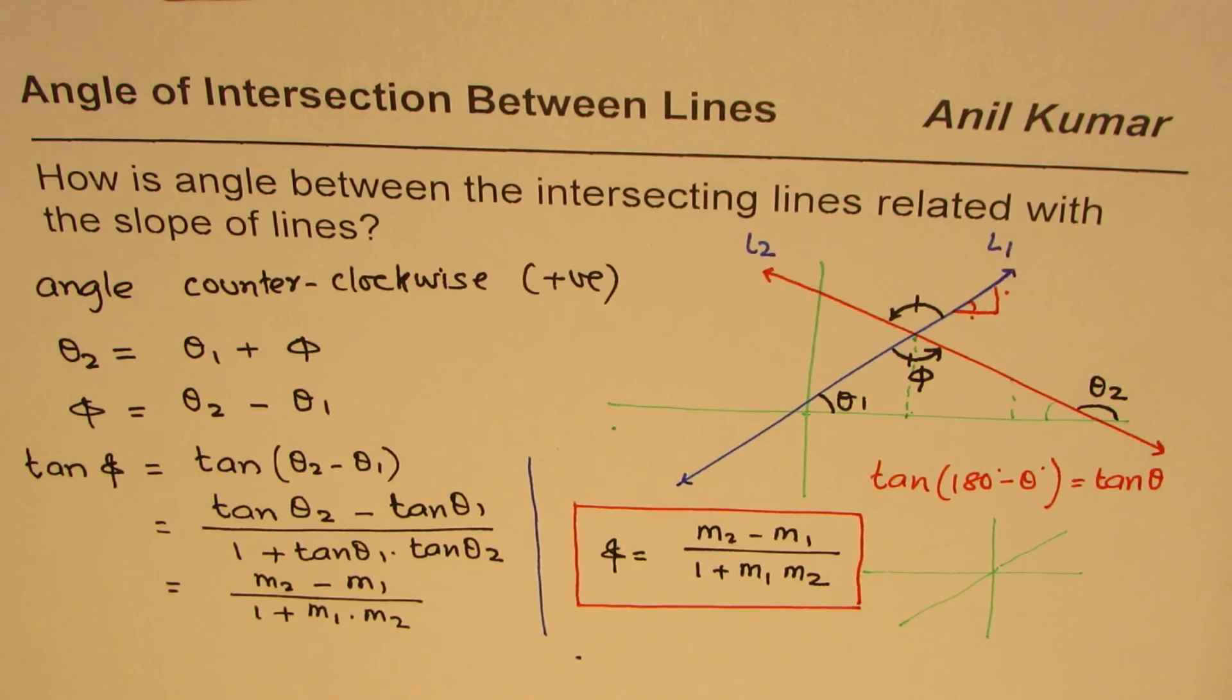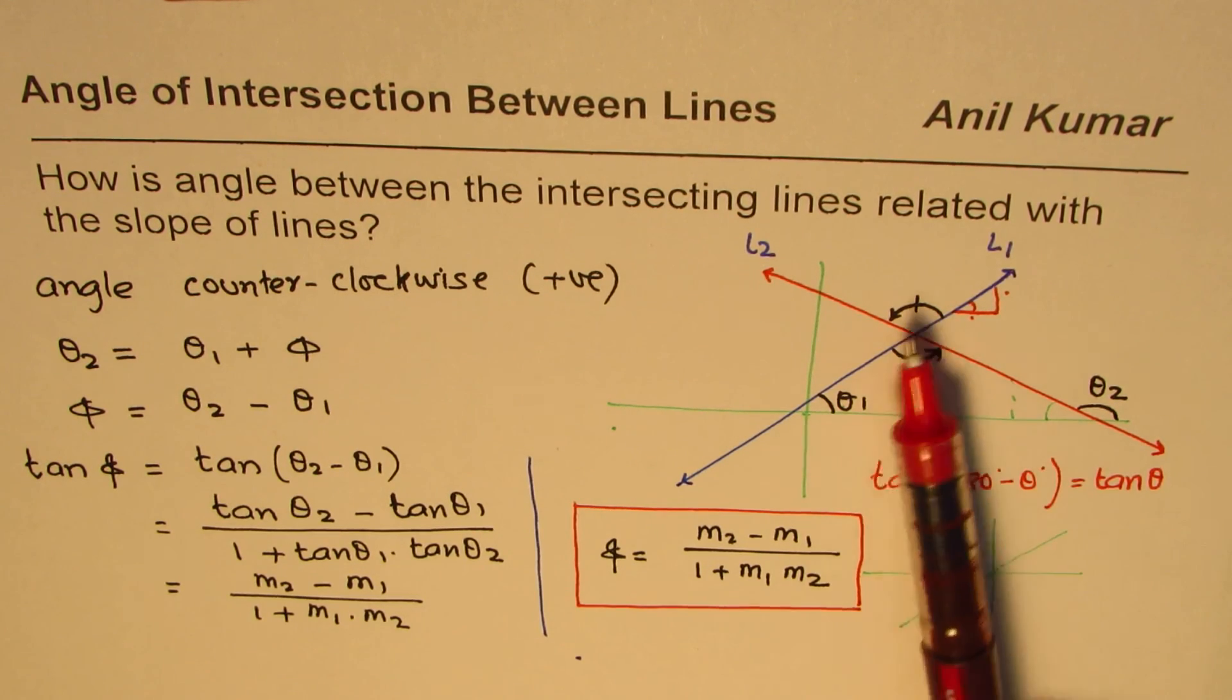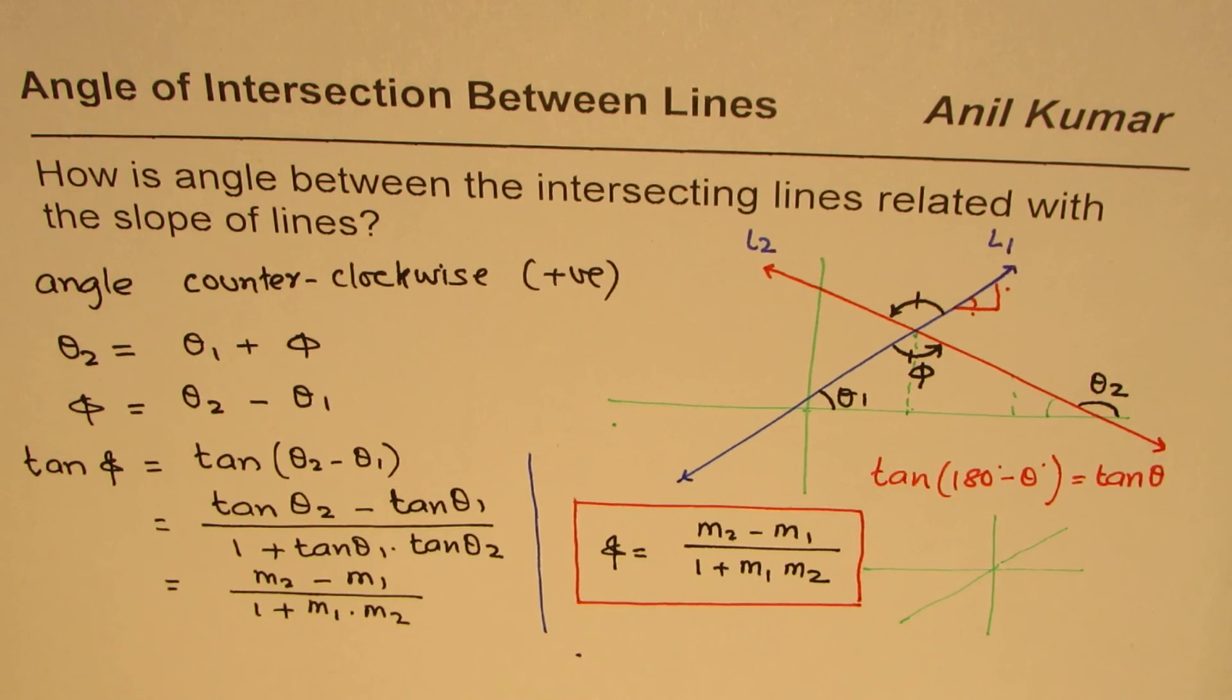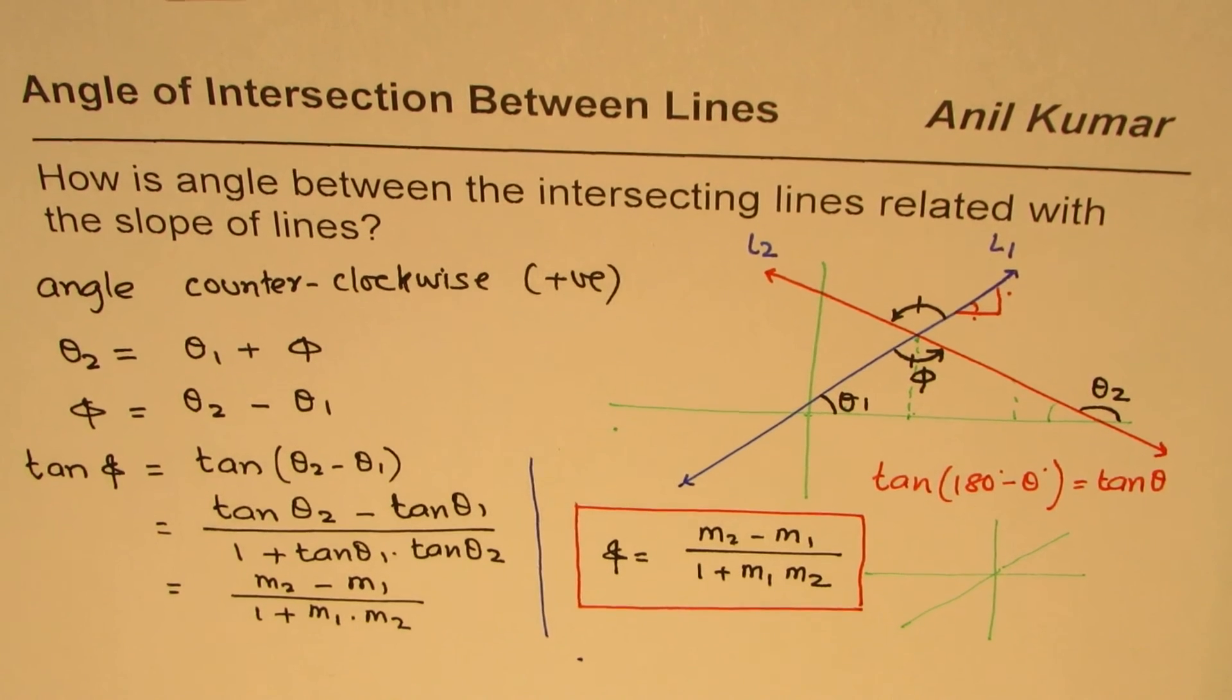Anyway, in short, the angle between the intersecting lines can be found from slope of the line. Now we will take a few examples where we will find the angle using slope of the lines. I am Anil Kumar and I hope that helps. Thank you and all the best.